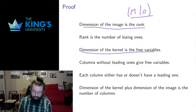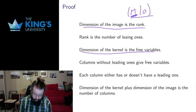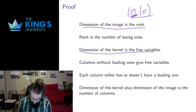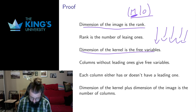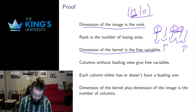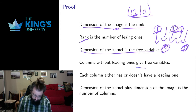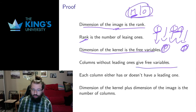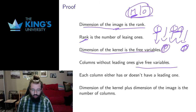The dimension of the solution space of the system is the number of free parameters. Every column without a leading one will be a free parameter. So M has some number of columns. Some of these columns are going to have leading ones; some are not. Any column with a leading one contributes to the rank, so it contributes to the dimension of the image. Any column without a leading one gives a free variable for the system, so it contributes to the dimension of the kernel. In this way the kernel and the image fit together, and what these add up to is the number of columns.